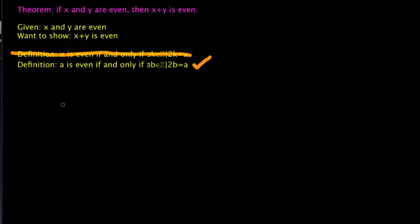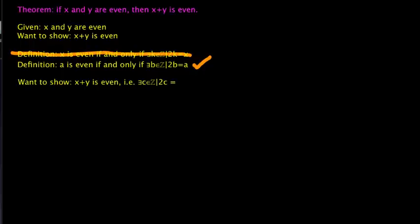Now that we have our definition, we can go back and restate what we're trying to show in terms of that definition. What we want to show is that x plus y is even — i.e., that there exists a c, an element of ℤ, such that 2c is equal to x plus y. That is what we're trying to show.